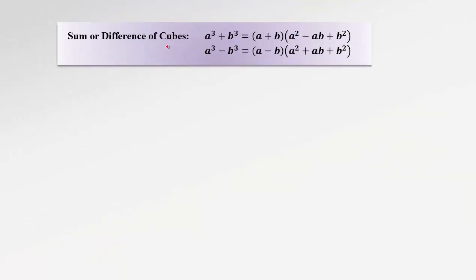The last type of formulas we need to know is the sum or difference of cubes. The sum of cubes factors using a short bracket and a long bracket. In the short bracket, write exactly the same terms seen under those cubes with the same sign. The long bracket is similar to the perfect square formula but without the double: first term squared, then switch the sign, product of the two terms (do not double), then last term squared. The last sign is always positive, because squaring any number gives a positive result.